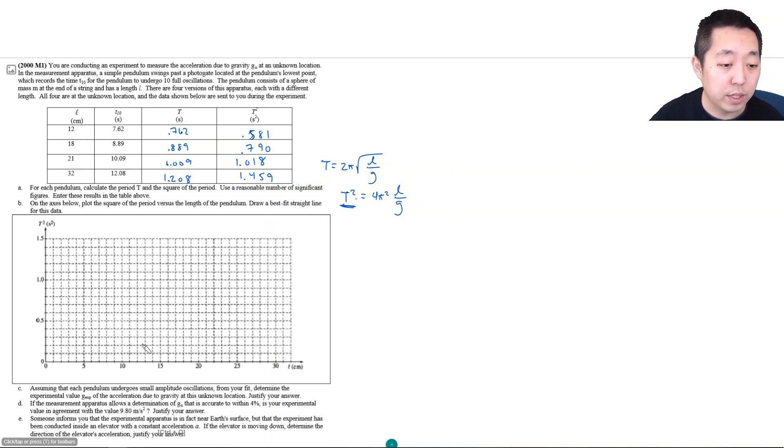Let's plot this. At 12 centimeters, I'm at 0.581. So on the y-axis, 0.5, 0.6, 0.7, 0.8, 0.9, 1.0. At 12 cm I go up to 0.58, so I'll put it about there.